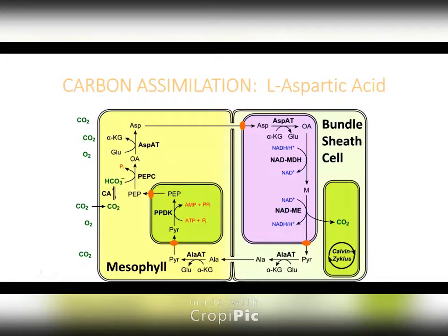What happens here is that aspartic acid is actually your carrier — your carbon carrier — that allows you to take the carbon that the plant has taken up and put it in the bundle sheath cells so it can be used to make photosynthate.